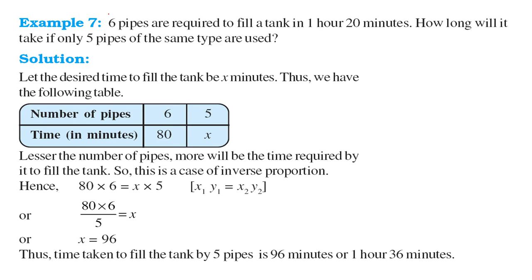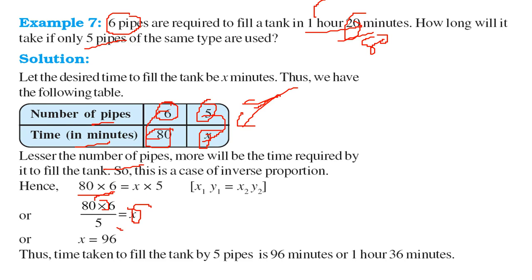So let us take some examples. 6 pipes are required to fill a tank in 1 hour 20 minutes. 1 hour is 60 minutes, 20. So 60 plus 20 is 80 minutes. So 80 minutes. 6 pipes are required to fill a tank in 80 minutes. How long will it take if only 5 pipes of the same types are used? So let us make a table. Number of pipes and time. So 6 for 6 pipes, 80 minutes. For 5, how much? Now these are in inverse relation. That is lesser number of pipes, more time is required to fill the tank. So this is the case of inverse proportion. You can just do it. 80 into 6 will be equal to 5 into x. And you can find x by dividing this by 5. You will get x equal to 96.